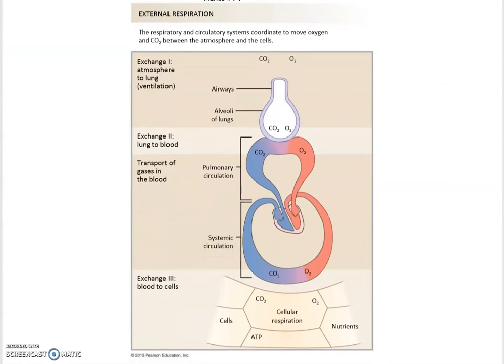Here is a summary of external respiration. External respiration is the gas exchange between the lungs and the blood. At the alveoli of the lungs, with blood flowing alongside, CO2 moves from the blood into the alveoli, and oxygen moves from the alveoli into the blood.